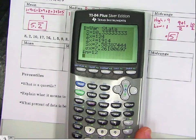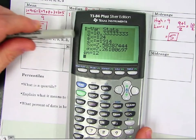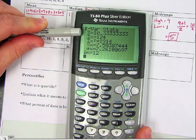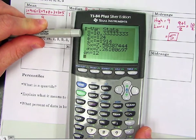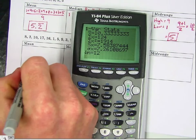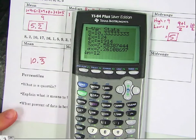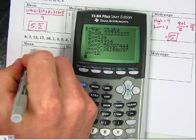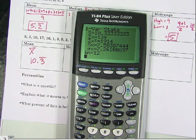And you should recognize that first thing there, X bar. X bar is your mean. So it's 10.3 repeating.